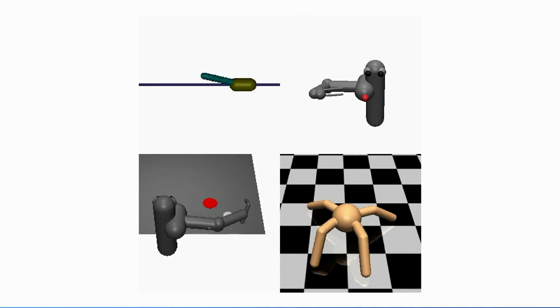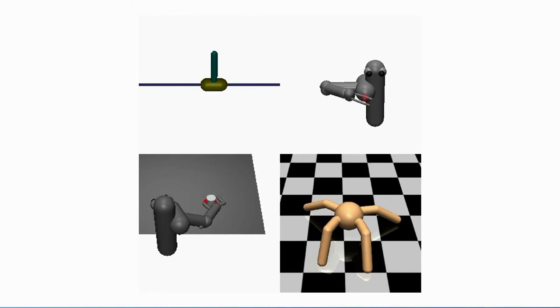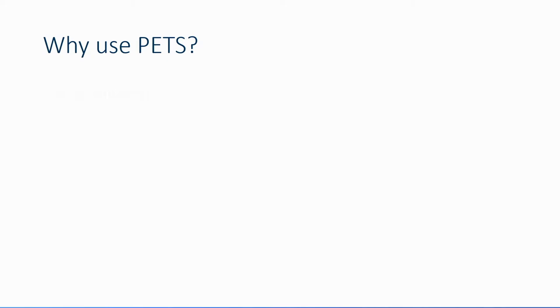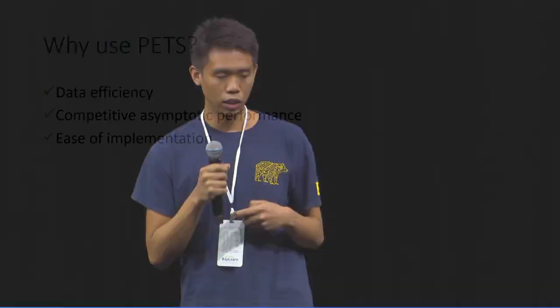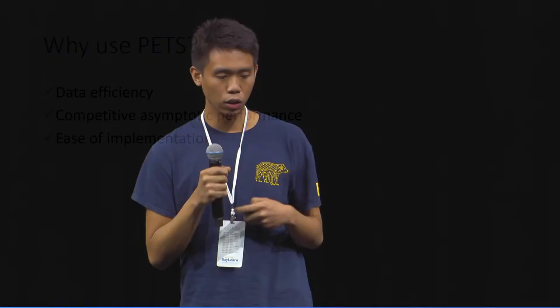So why should you use PETS? PETS is data-efficient, as illustrated in the previous slides. It's competitive with other methods in terms of asymptotic performance, and it's quite easy to implement — all we had to do was take a single neural network model, duplicate it several times to get a measure of uncertainty, and propagate several particles in parallel to incorporate this uncertainty information. Ultimately, PETS is a simple way to deal with the issue of model bias, which holds model-based RL methods back, allowing it to retain the same data efficiency while being competitive with other methods.